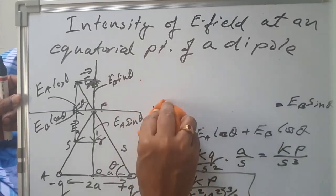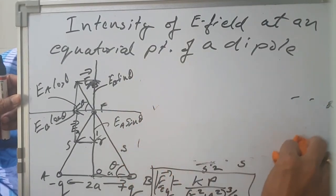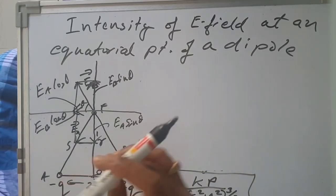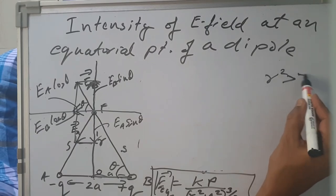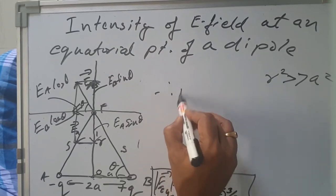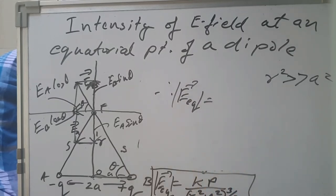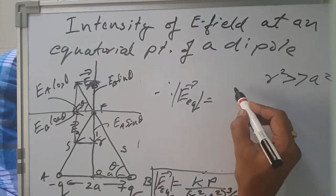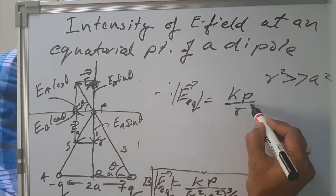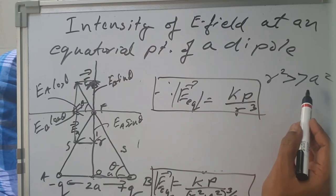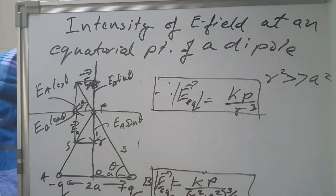Now, if point P is very far away from the dipole, or if the dipole is very small, then r squared is very large compared to a squared. Therefore, for E equatorial, we can neglect a squared compared to r squared. This gives r squared to the power of 3 by 2, which makes it r cubed. Therefore, E equatorial equals kP upon r cubed when the dipole is small, or r is very large compared to a.